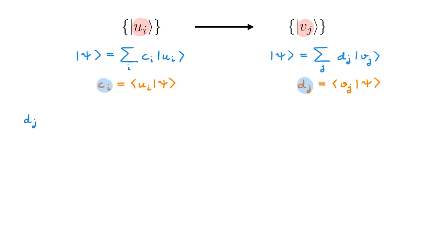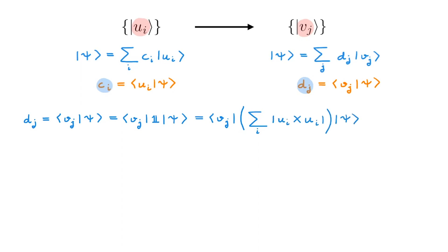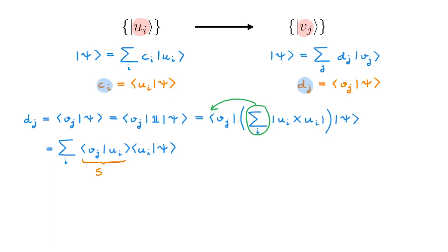To answer this question, we start by writing d_j as the bracket between v_j and psi, then we insert the identity in the middle, and we now get to the critical step of the derivation. We insert the resolution of the identity in the u basis. After this, we can move the sum to the beginning, and we end up with the sum over i of the bracket between v_j and u_i times the bracket between u_i and psi. This first term is the bracket between v_j and u_i, which is a scalar, and we call it S_ji. The second term is the bracket between u_i and psi, which we recognize as c_i. We can then simplify the expression, and we get d_j equals the sum over i of S_ji times c_i. What we can see is that given the c_i, we can find the d_j by simply calculating these numbers S_ji, which are given by the overlaps between the corresponding basis states.